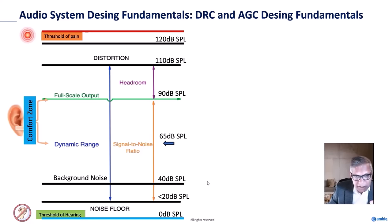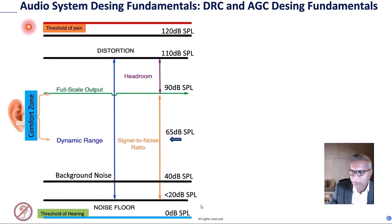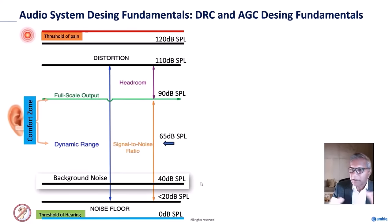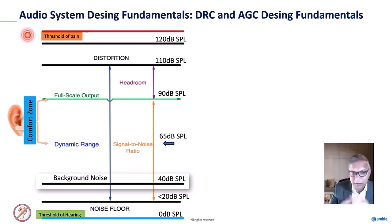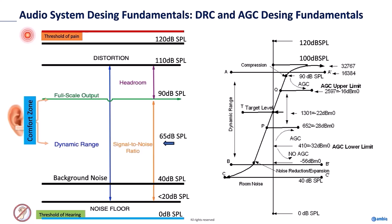In a typical test chamber for telco, the floor noise is 10 to 20 dB SPL. In typical office ambient conditions it's about 40 dB, and in a cafeteria or coffee shop it can reach 55 dB. When designing DRC, noise suppressor, and AGC, you take all these levels into consideration.